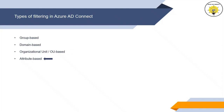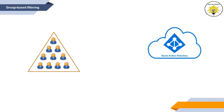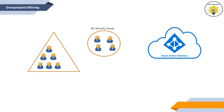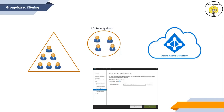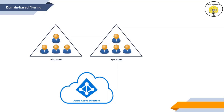Let's assume we have 10 users in Active Directory and we want to synchronize only four of them to Azure Active Directory. To achieve this, we create a security group in Active Directory, add those four users to it, and specify this security group on the 'Filter Users and Devices' page during Azure AD Connect installation. Group-based filtering can only be configured during installation with custom settings and cannot be configured afterward.